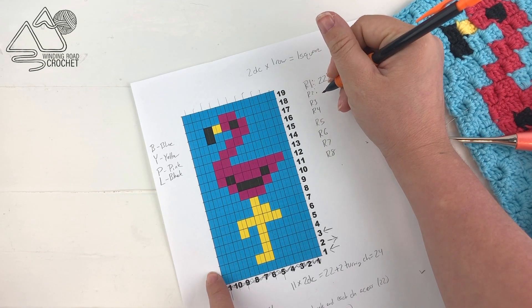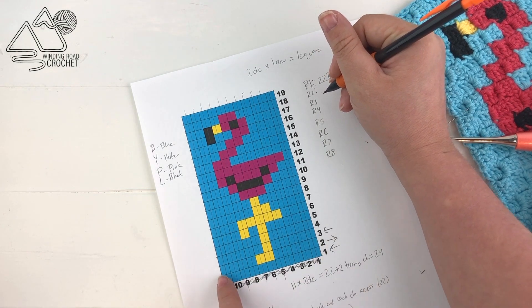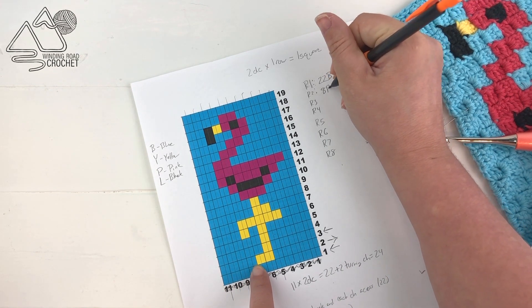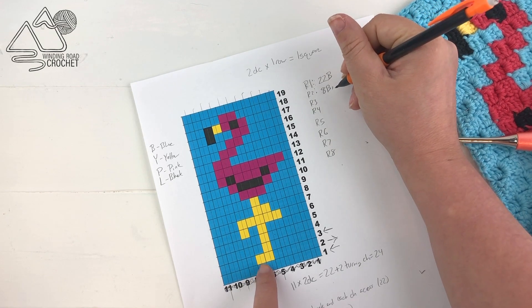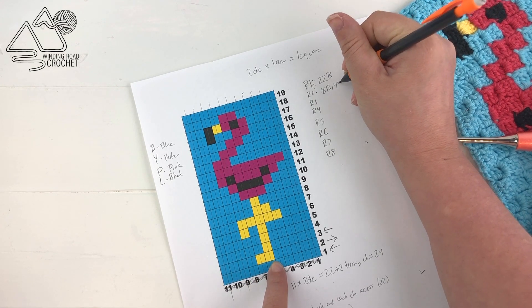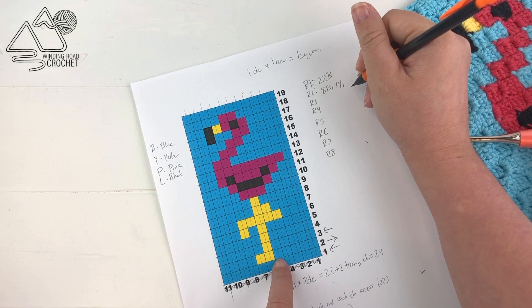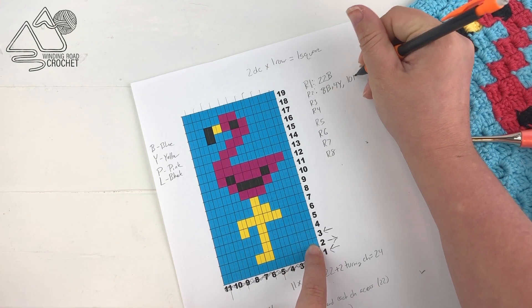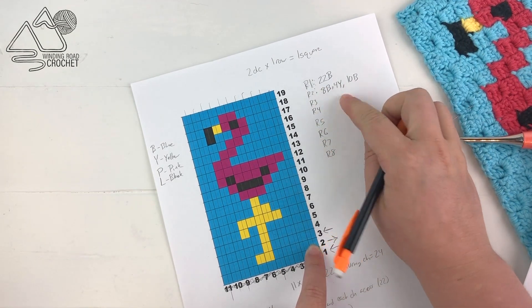For row two, again we're coming back from the left to the right. We're going to have eight blue double crochet. There's four squares, so there's going to be eight double crochet. We're doing four yellow double crochet, and then we're doing ten blue double crochet, five squares.